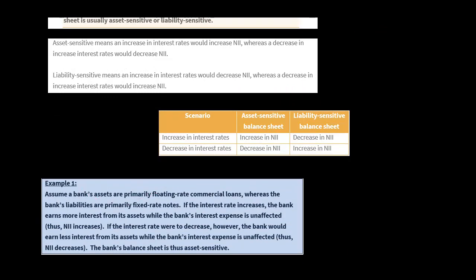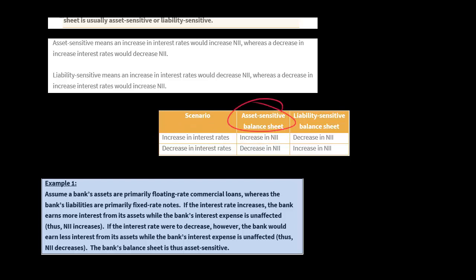Let's look at a couple of examples so it's not so abstract. Say we've got a bank whose assets are primarily floating rate commercial loans — so floating rate assets — and the liabilities are fixed rate notes. If interest rates go up, the fixed rate notes aren't going to be affected, so the liabilities aren't going to change. But the assets are floating rate, so the rate we're getting on the commercial loans is going to increase. The bank's net interest income is going to increase. Because there's an increase in net interest income when there's an increase in interest rates, we've got an asset sensitive balance sheet.